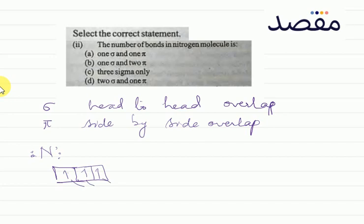One bonding, which is head-to-head, can be called px. But you have one bonding py, it will be side-by-side, and pz will be side-by-side. So how many sigma bonds? And how many pi bonds? Two. So we have option B. Option number B is the correct answer. One sigma and two pi bonding.